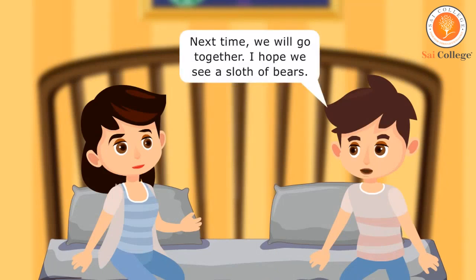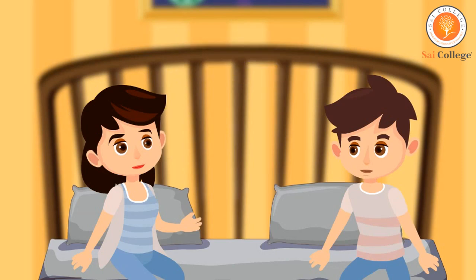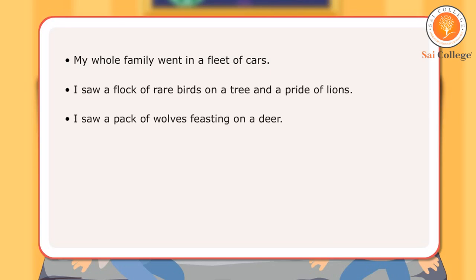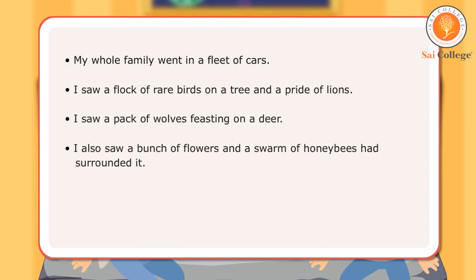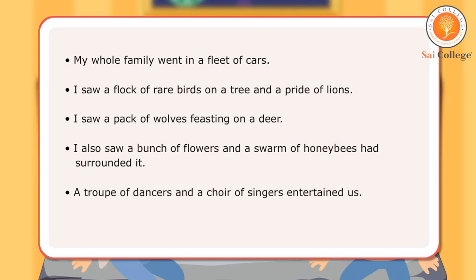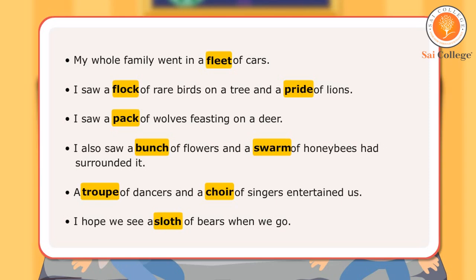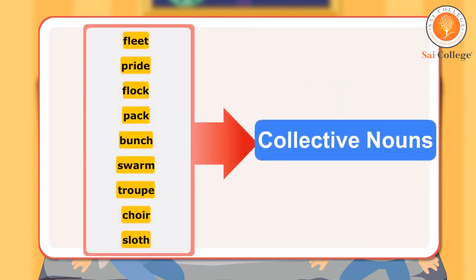The girl and the boy have used collective nouns to speak about a group of things and animals using one word to categorize these groups. The words fleet, flock, pride, pack, bunch, swarm, troupe, choir, and sloth are examples of collective nouns.